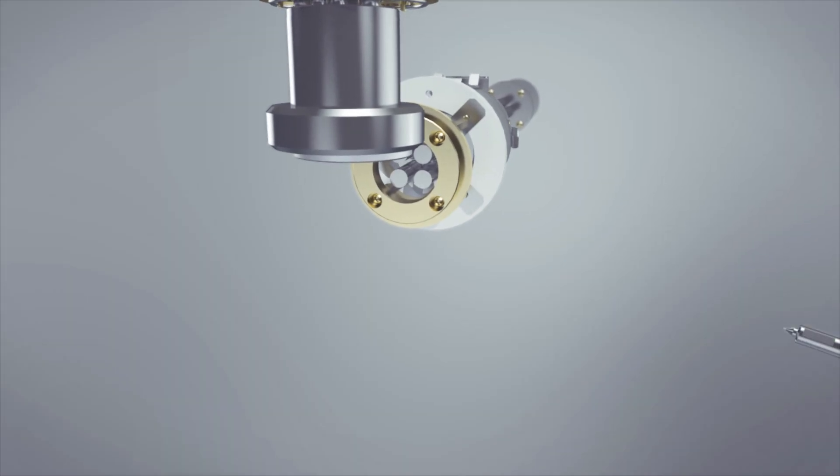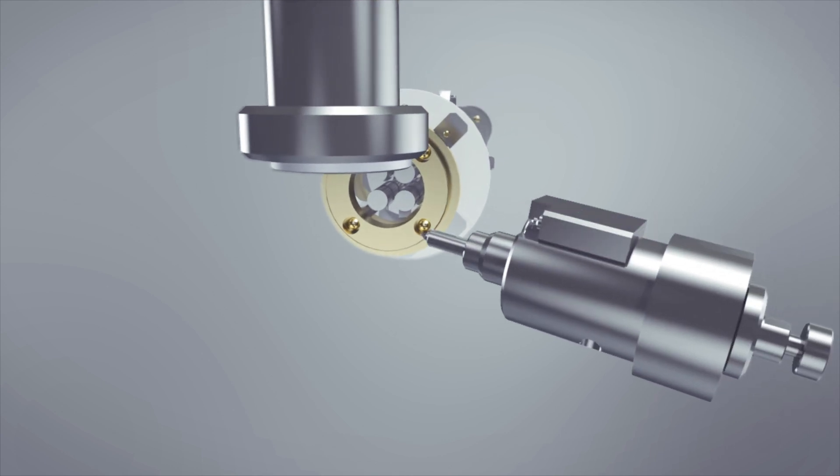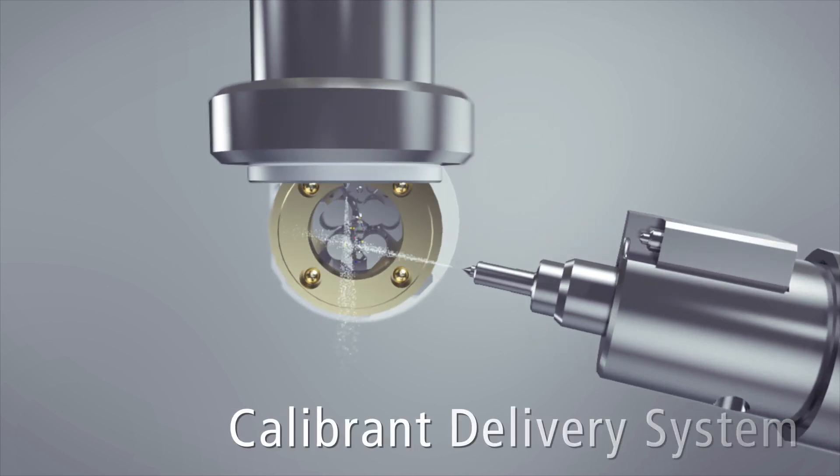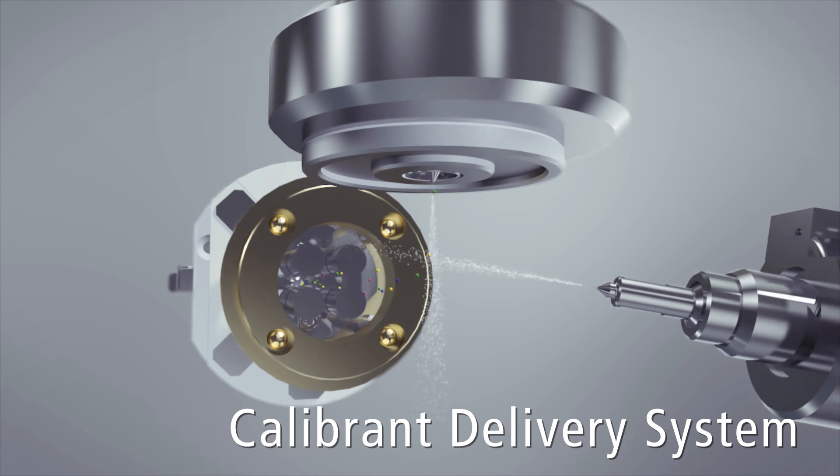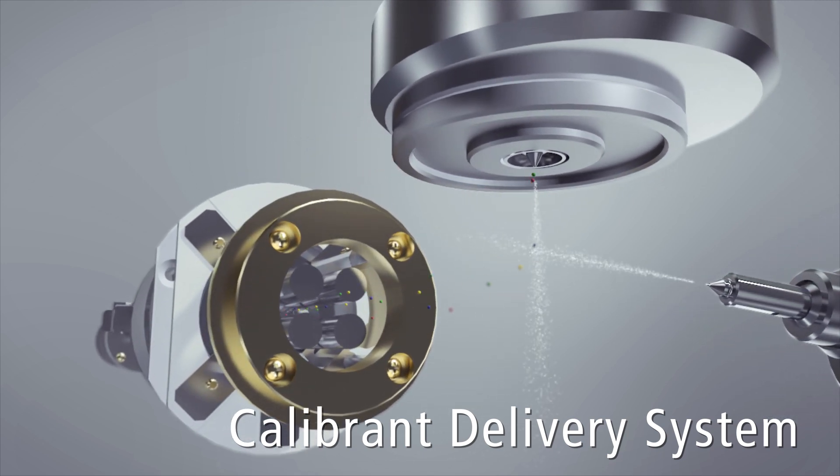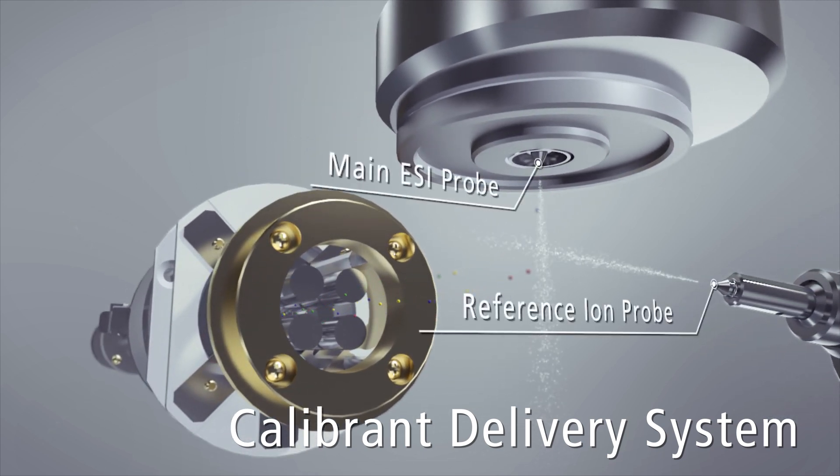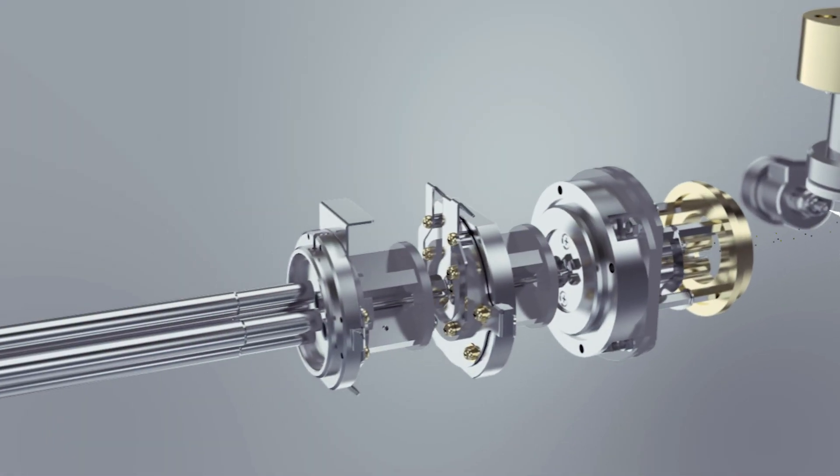For sample introduction, the LC-MS 9030 uses a calibrant delivery system. An independent ESI probe is dedicated for calibrant ionization to ensure successful mass calibration whatever the experimental conditions.